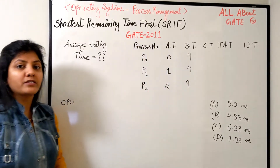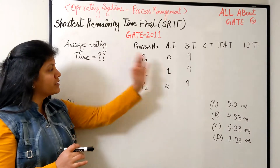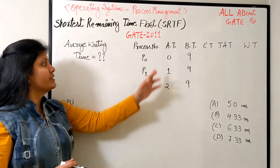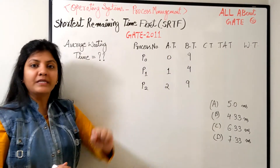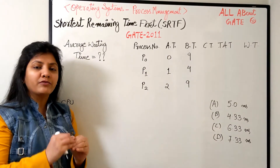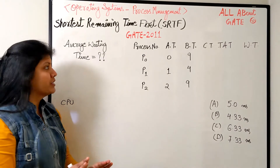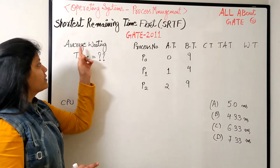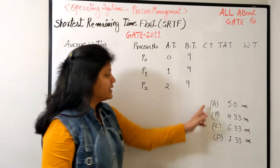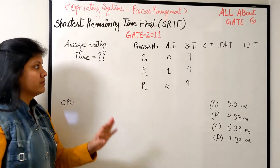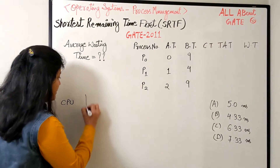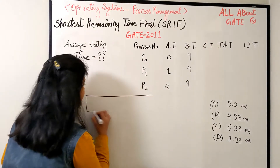Starting with the GATE 2011 question. The question is straightforward - process details are given. Consider a system where we have processes with these arrival times and burst times in milliseconds. We are using Shortest Remaining Time First in preemptive mode. We have to find out the average waiting time for scheduling the processes, and these are the given options. We need to find the Gantt chart for scheduling.